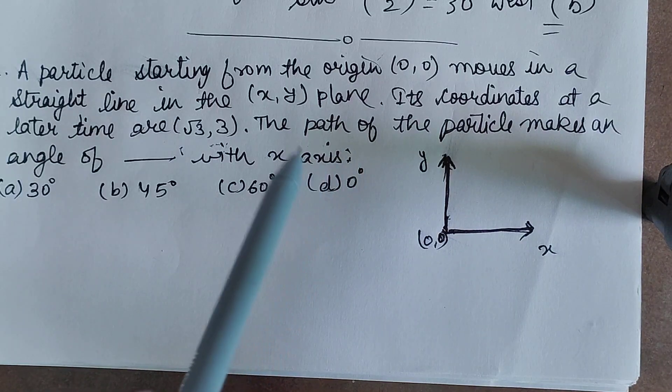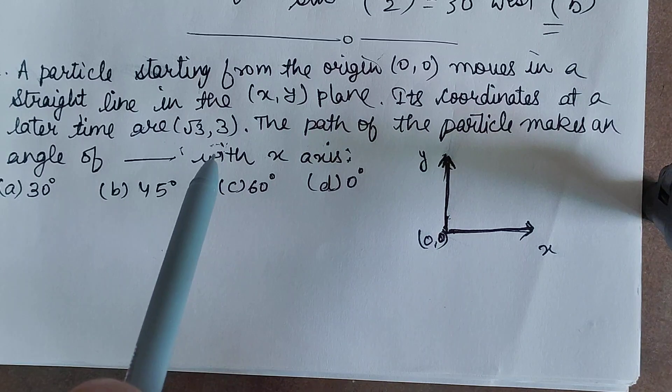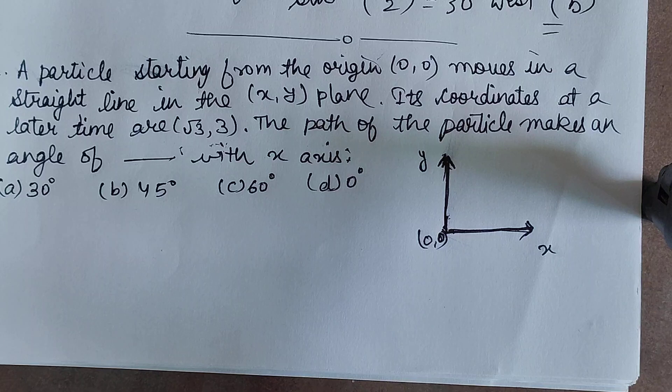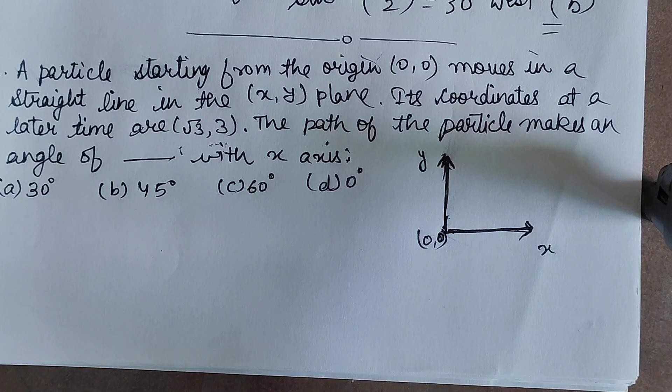The path of particle makes an angle which is unknown we have to find out with the x-axis. So how much angle it is making with the x-axis that we have to find out. So let's make this diagram.